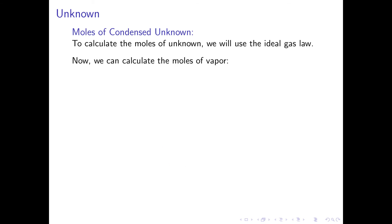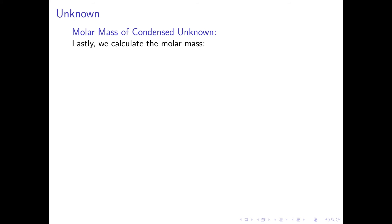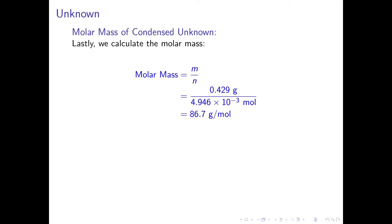We can now calculate the number of moles of unknown vapor. N equals pressure times volume divided by the gas constant times temperature: 0.9995 atm times 0.1511 liters, divided by 0.08206 liter·atm per mole·Kelvin times 372.1 Kelvin, giving 4.946 × 10⁻³ moles. The molar mass of the unknown is then 0.429 grams divided by 4.946 × 10⁻³ moles, giving a molar mass of 86.7 grams per mole.